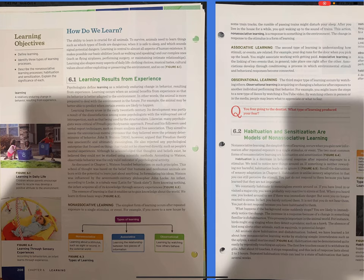John B. Watson, however, argued that Freudian theory was unscientific and ultimately meaningless. He also rejected any psychological enterprise that focused on things that could not be observed directly, such as people's mental experiences. Although he acknowledged that thoughts and beliefs exist, he believed they could not be studied using scientific methods. According to Watson, observable behavior was the only valid indicator of psychological activity. As discussed in Chapter 1, Watson founded behaviorism on such principles.